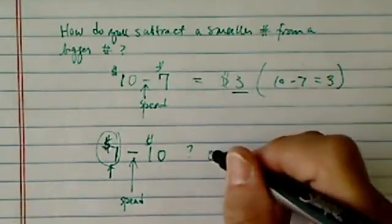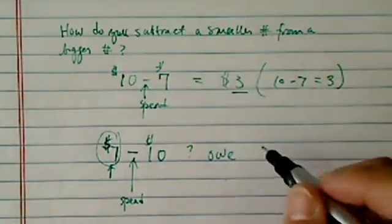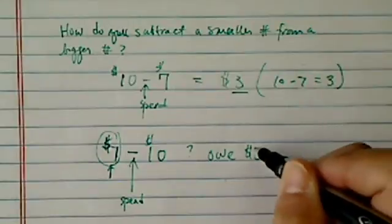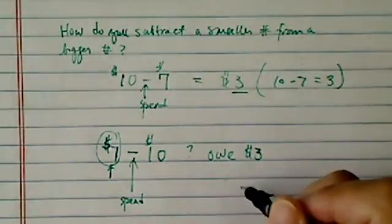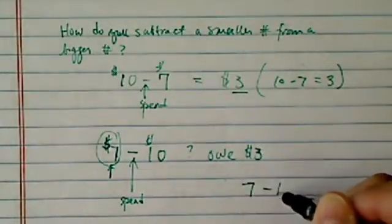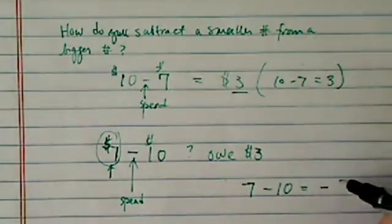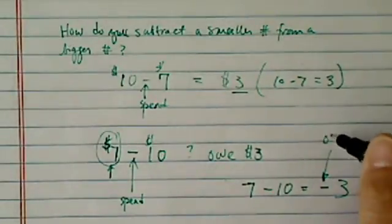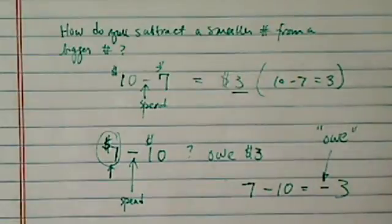So what now? We all know that in real life, now we owe $3. Mathematically, how we write this one is 7 minus 10 equal to minus 3. This minus sign we're putting in front, we mean it by we owe something.